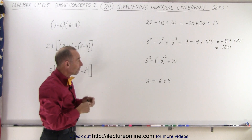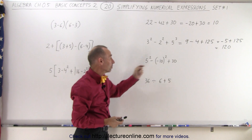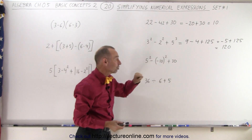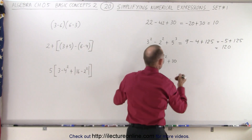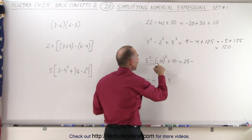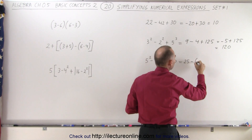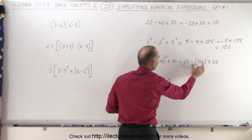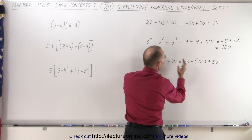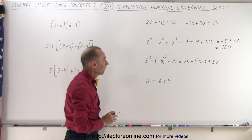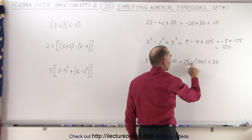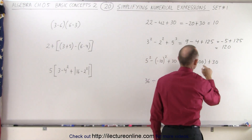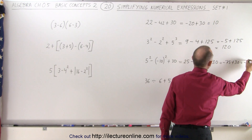On the next expression, we have exponents and subtraction: 5 squared minus the quantity negative 10 squared. We should do the exponents first. 5 squared gives us 25. Negative 10 times negative 10 is a positive 100. But we have to subtract that from 25, and then add 30 to that. Subtraction and addition have the same priority, so we go from left to right. 25 minus 100 is minus 75, plus 30, which is equal to minus 45.